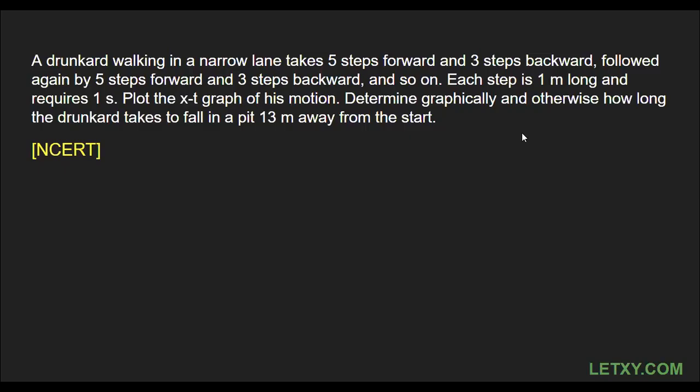Hello everyone. Here we have a question from NCERT. A drunkard is walking in a narrow lane. He moves five steps forward and three steps backward, then again five steps forward and three steps backward, and he keeps moving like this — five steps forward then three steps backward.